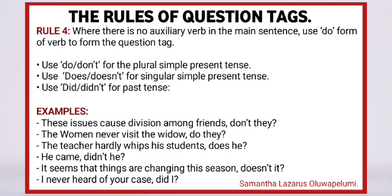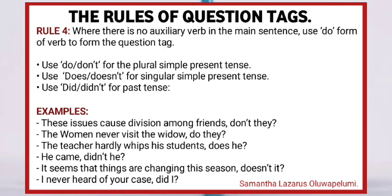The third rule: where there is no auxiliary verb in the main sentence, use the do-form of verb to form the question tag. Use 'do' or 'don't' for plural simple present tense. Use 'does' or 'doesn't' for singular simple present tense. Use 'did' or 'didn't' for past tense. Examples: 'These issues cause division among friends. Don't they?' 'The women never visit the widow. Do they?' 'The teacher hardly weeps his students. Does he?' 'He came. Didn't he?' 'It seems that things are changing this season. Doesn't it?' 'I never heard of your class. Did I?'